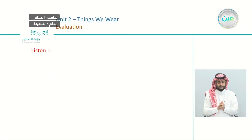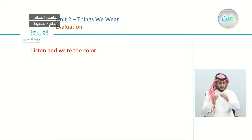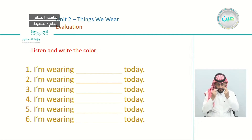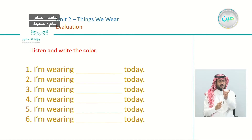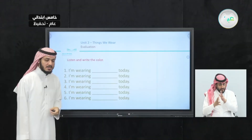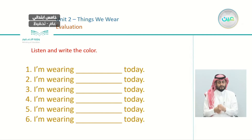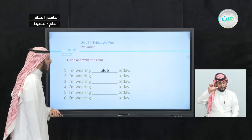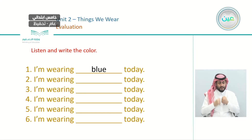Now: listen and write the colors. We have six sentences. Number one: 'I am wearing blank today.' Listen — 'I'm wearing blue today.' The color is blue. Number two: listen — 'I'm wearing red today.' The color is red. Number three: 'I'm wearing white today.' The color is white.